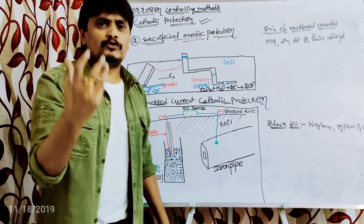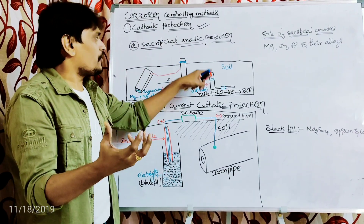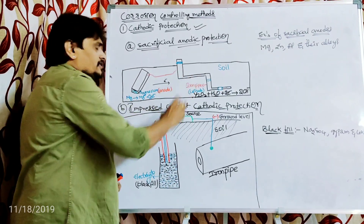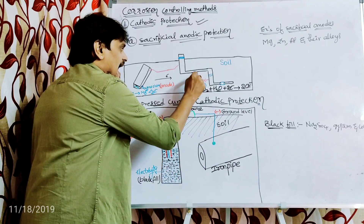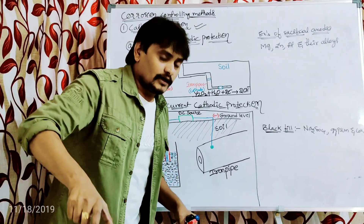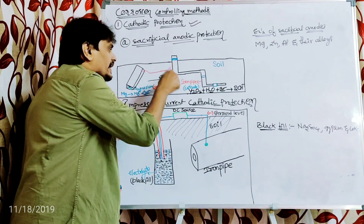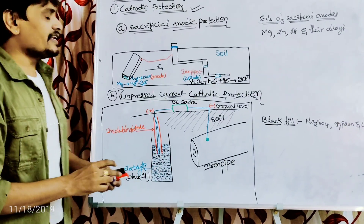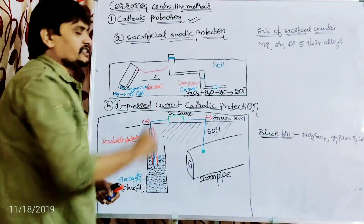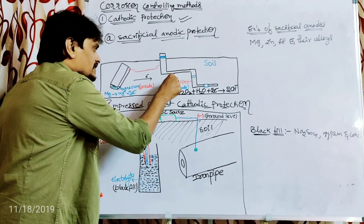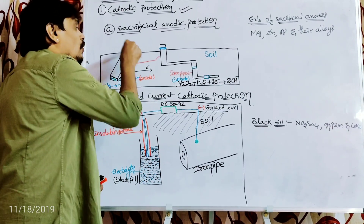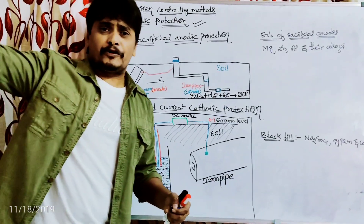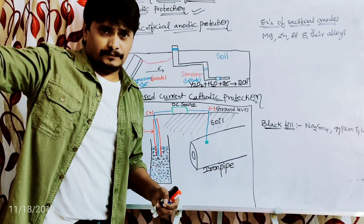We will understand what sacrificial anodes are while describing sacrificial anodic protection with the help of a figure. Our base metal here is an iron pipeline which is buried under the ground. Our goal is to protect the iron metal from corrosion. In sacrificial anodic protection, the iron metal should be connected to a metal which is more anodic compared to iron. Let us recapitulate the electrochemical series.